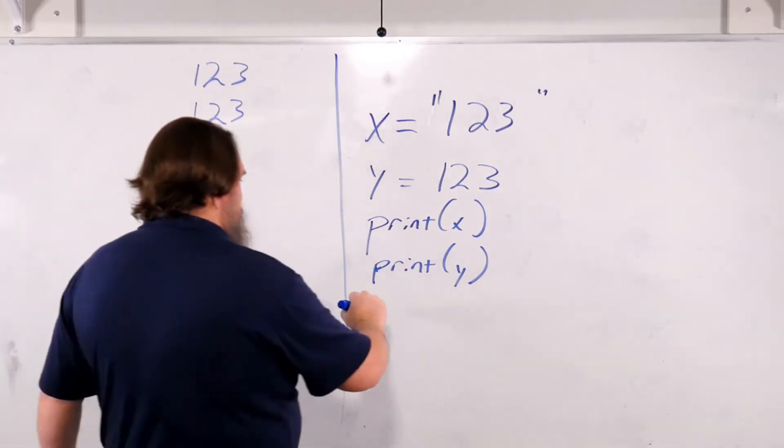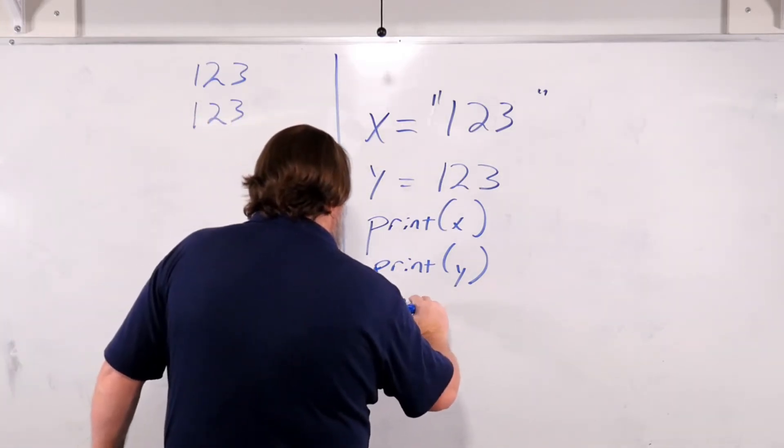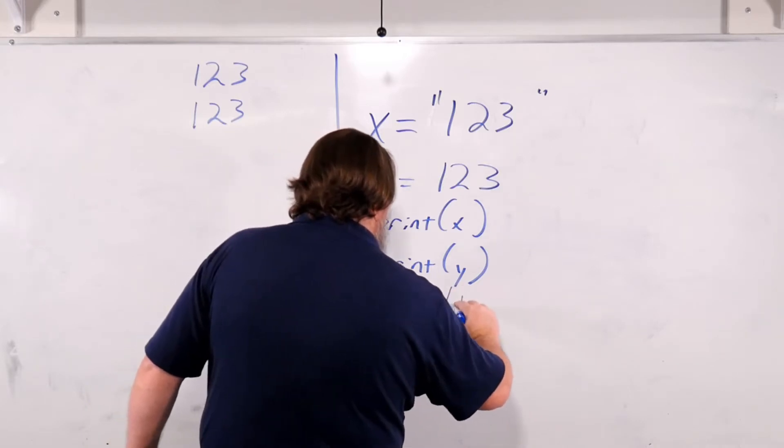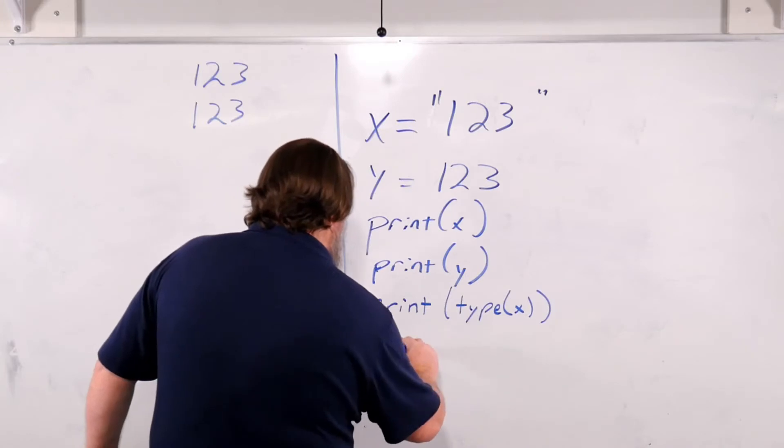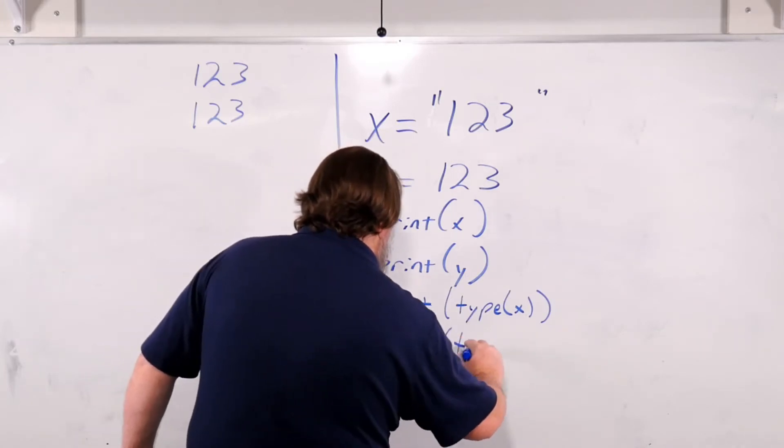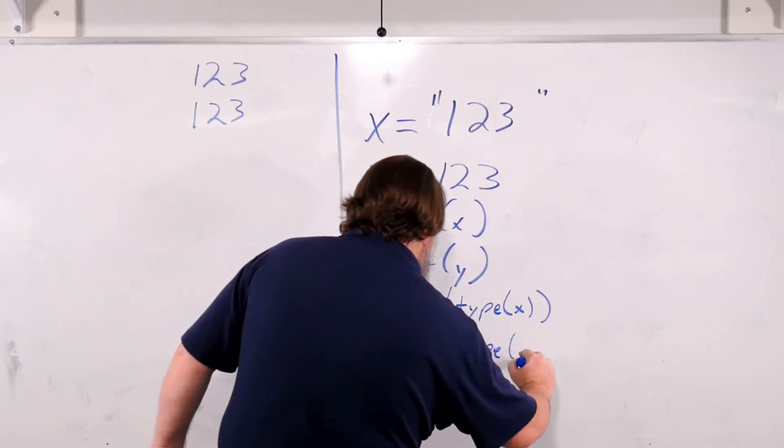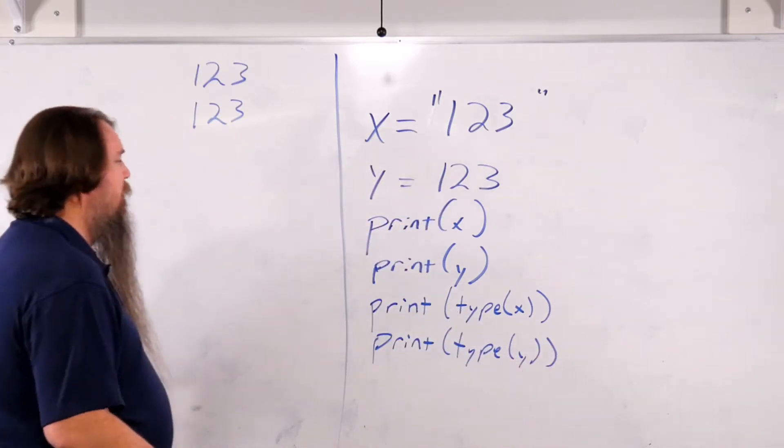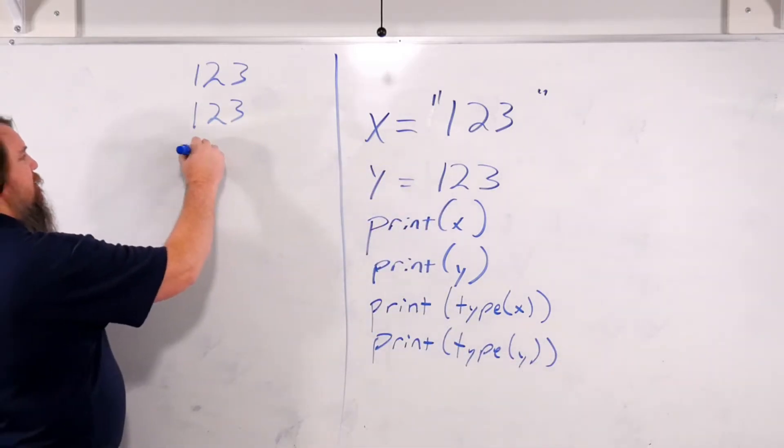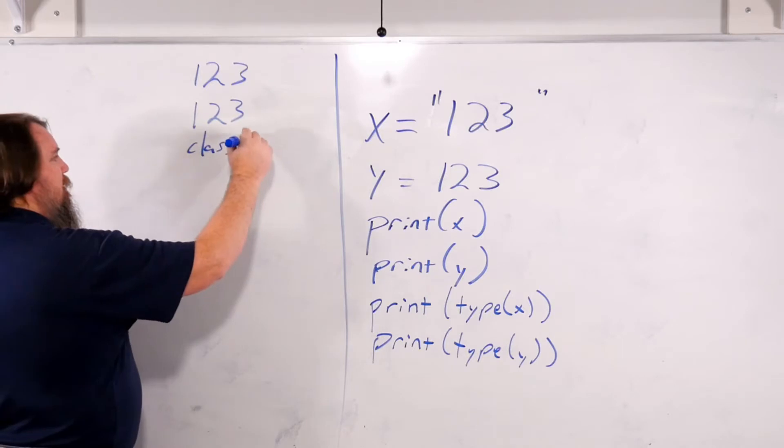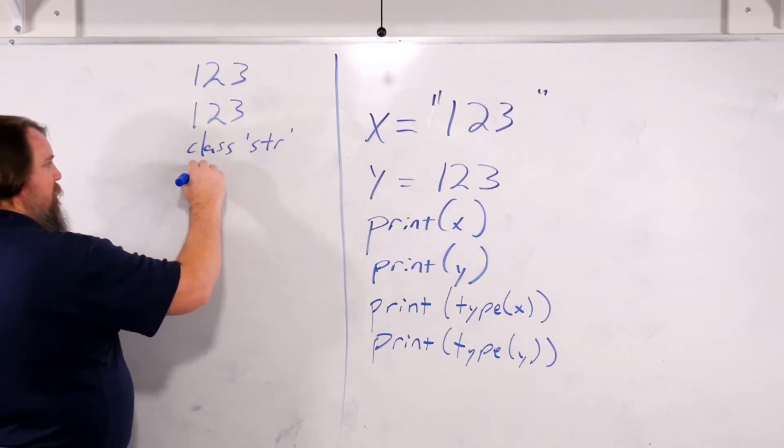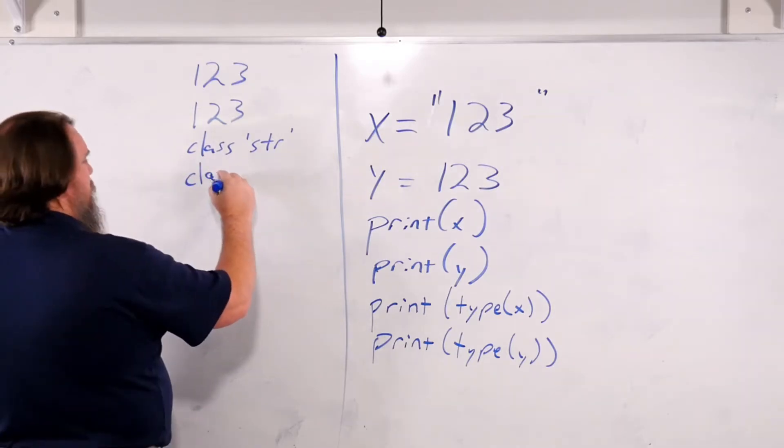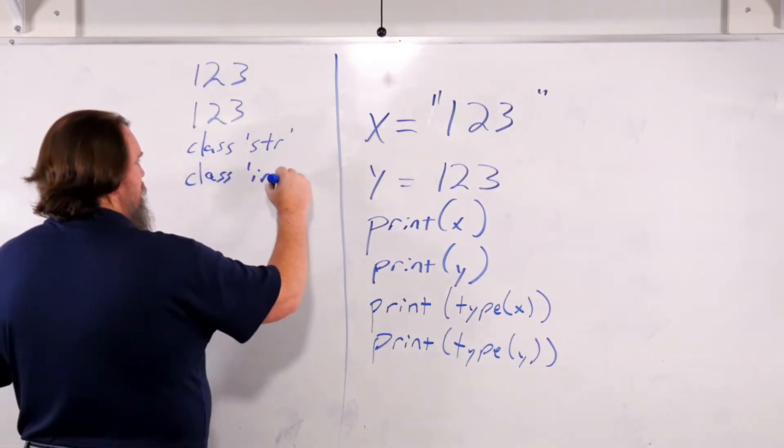But what happens if we say print the type of x and then print the type of y? Well the type of x is going to be class str and the type of y is going to be class int.